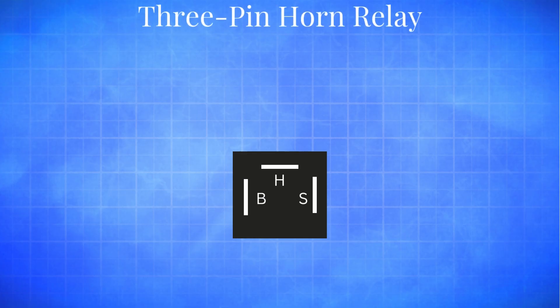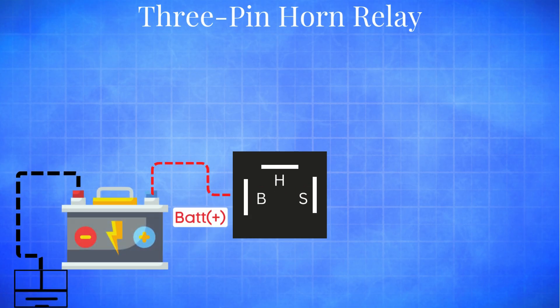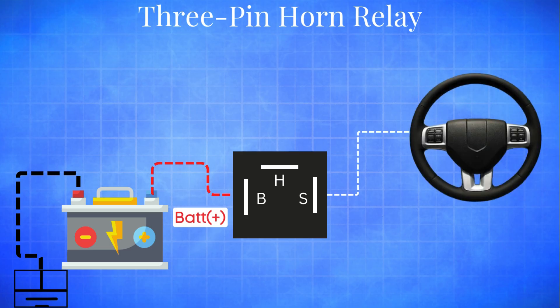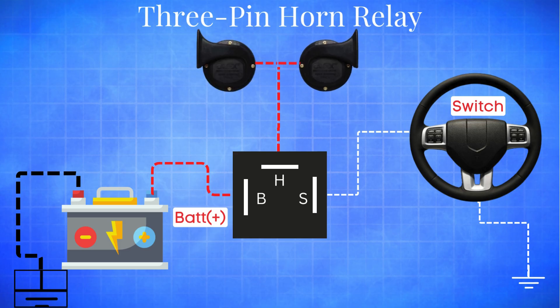Let's get started with the 3-pin horn relay. This type of relay is simple and commonly used in basic horn circuits. A typical 3-pin horn relay has three terminals: Pin B, connected to the positive terminal of the battery; Pin S, which goes to the horn button or switch (the other side of the switch is grounded); and Pin H, connected to the horn itself (the other side of the horn is also grounded).